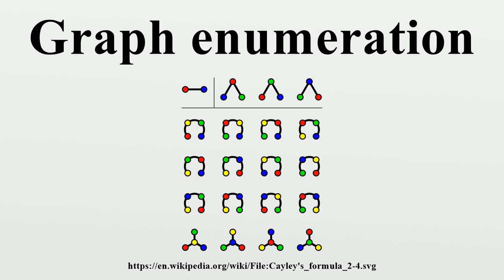In combinatorics, an area of mathematics, graph enumeration describes a class of combinatorial enumeration problems in which one must count undirected or directed graphs of certain types,